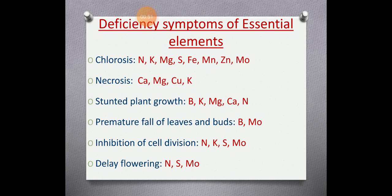When essential elements are not available in the required quantity, problems arise. For example, nitrogen, potash, manganese, iron, molybdenum, and zinc are all required in proper quantities. If they are not obtained in the proper quantity, chlorosis will occur — meaning the chlorophyll pigment does not develop properly, causing the disease called chlorosis.